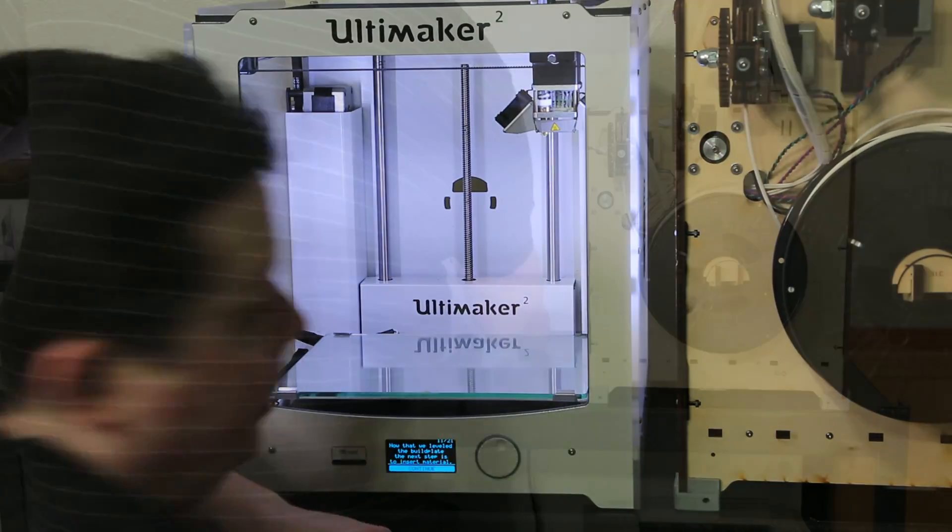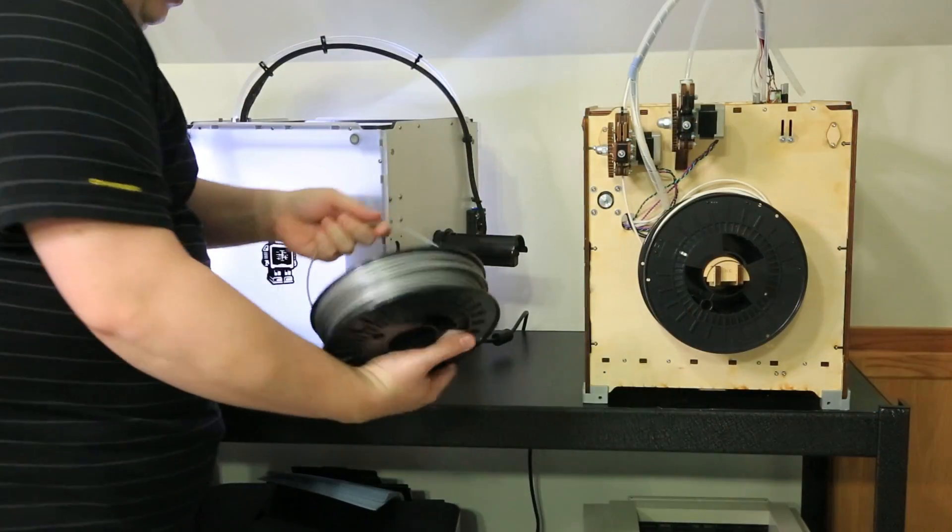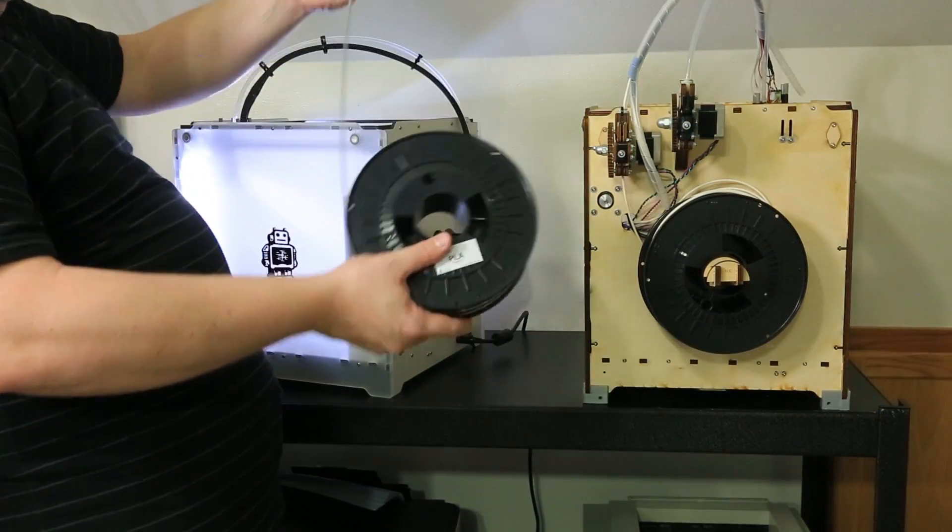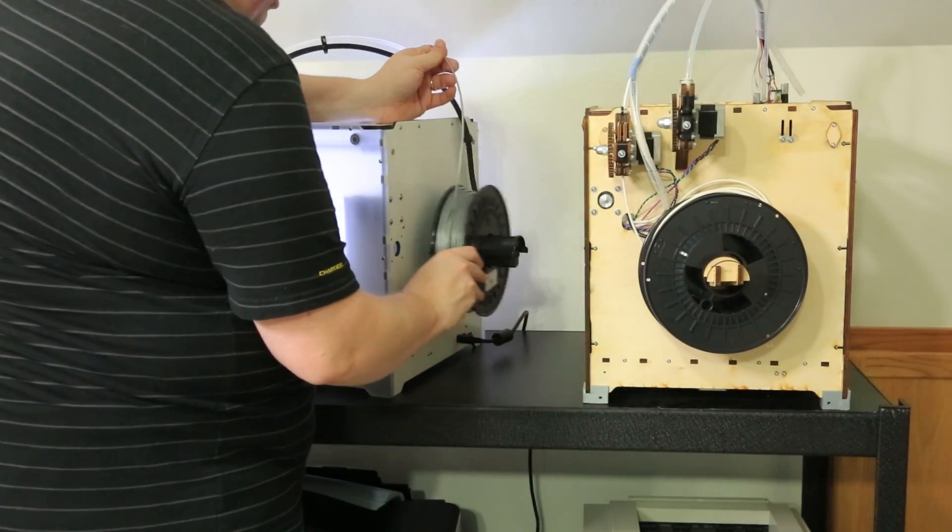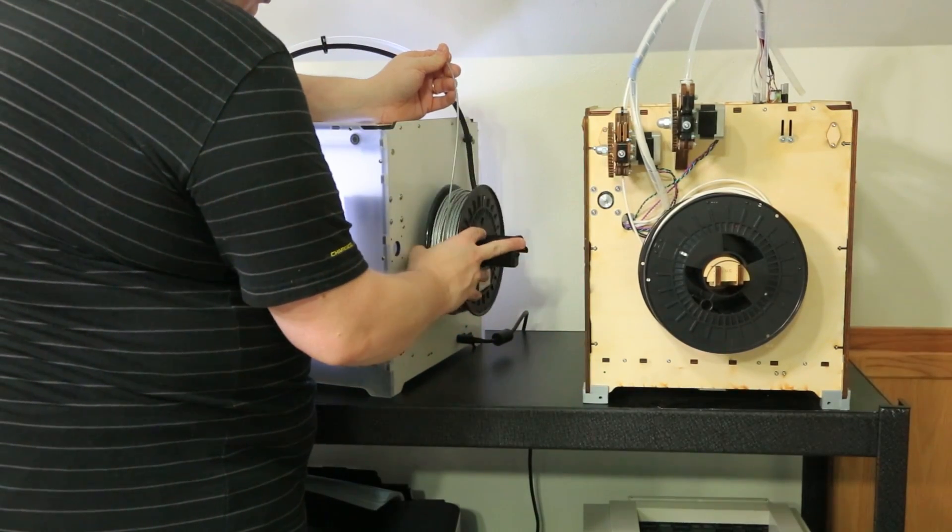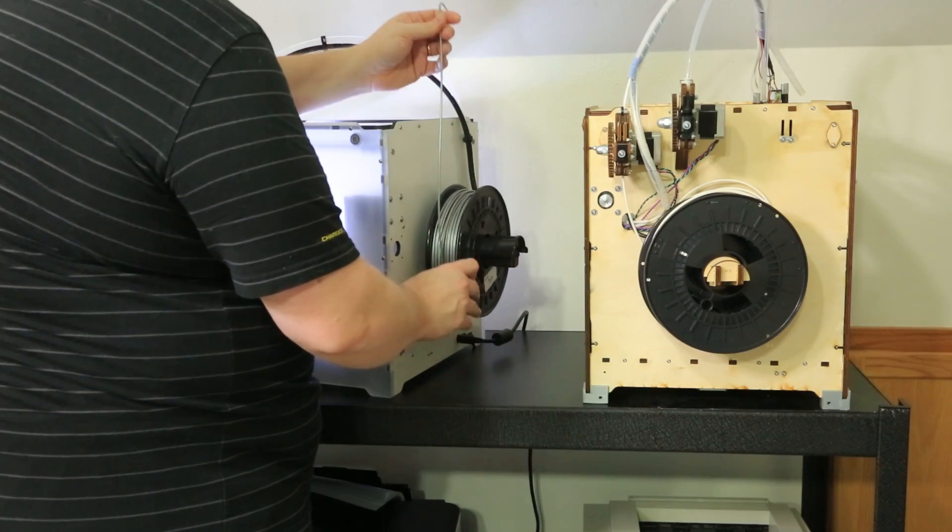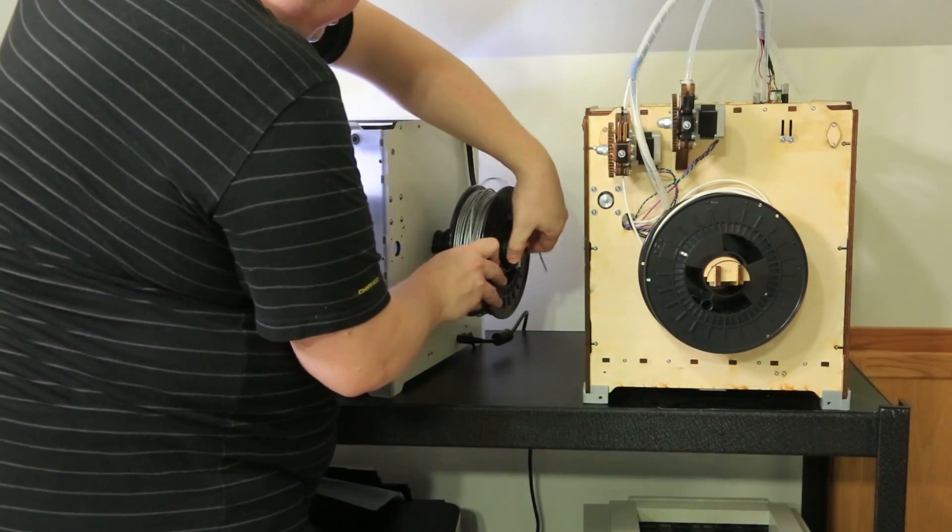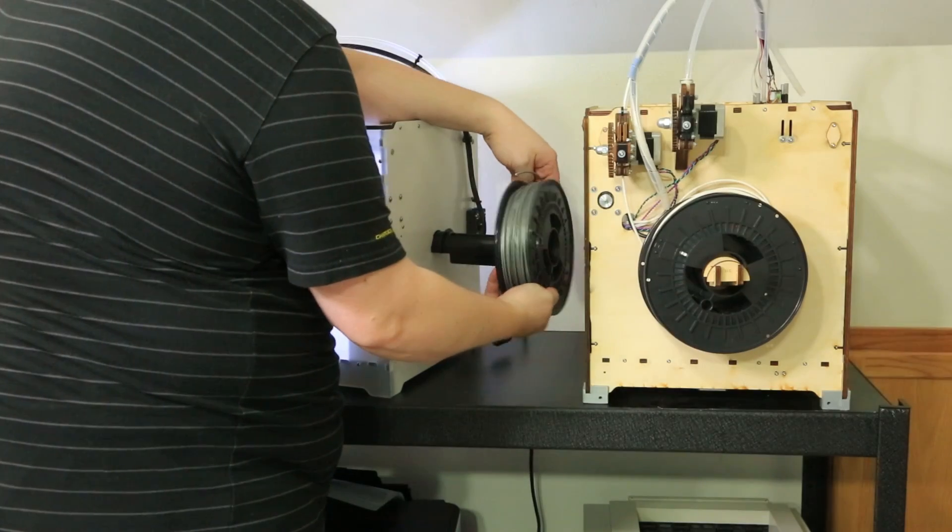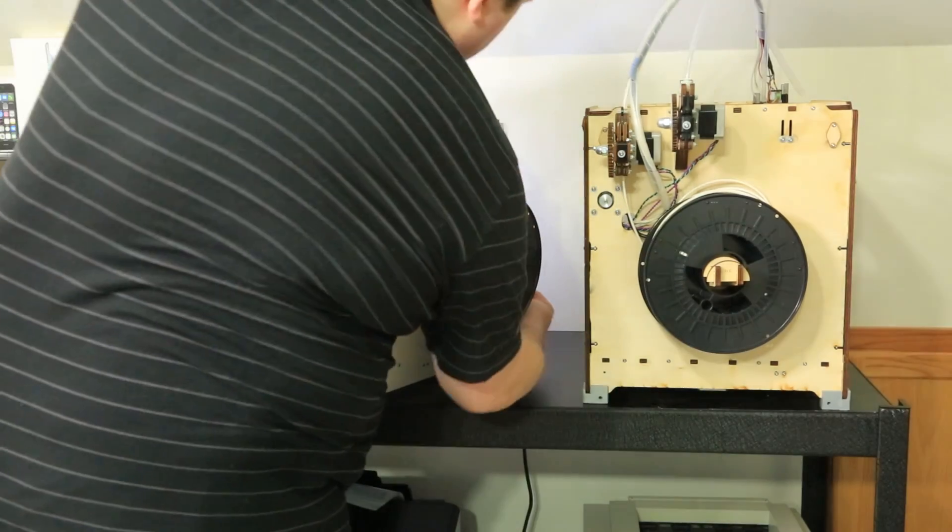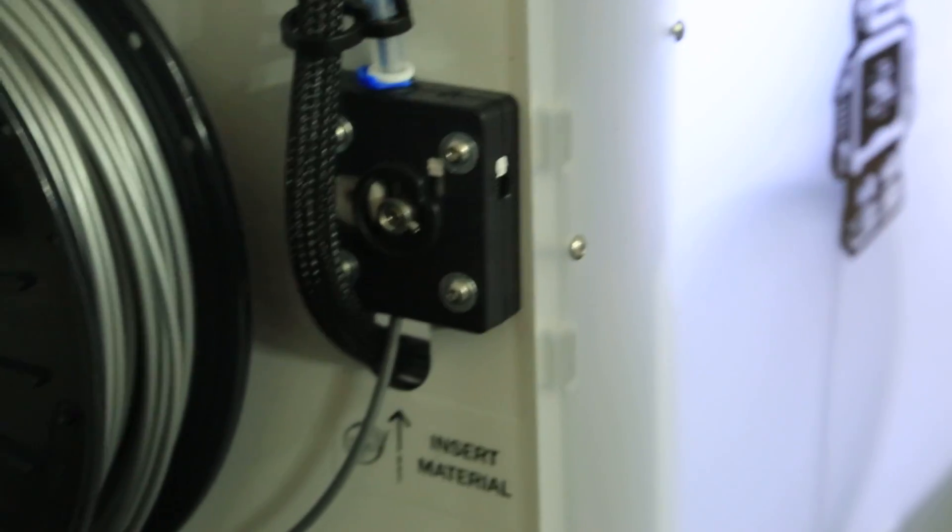Alright, so now it's time to load material. Alright guys, I already got a roll of silver material that was open so I'm going to go ahead and use this. Let's go ahead and slide it on. It's really cool, it actually has a mechanism now to stop it from coming off and it clips on. Very very cool. Although I put it on upside down. It should be like that.